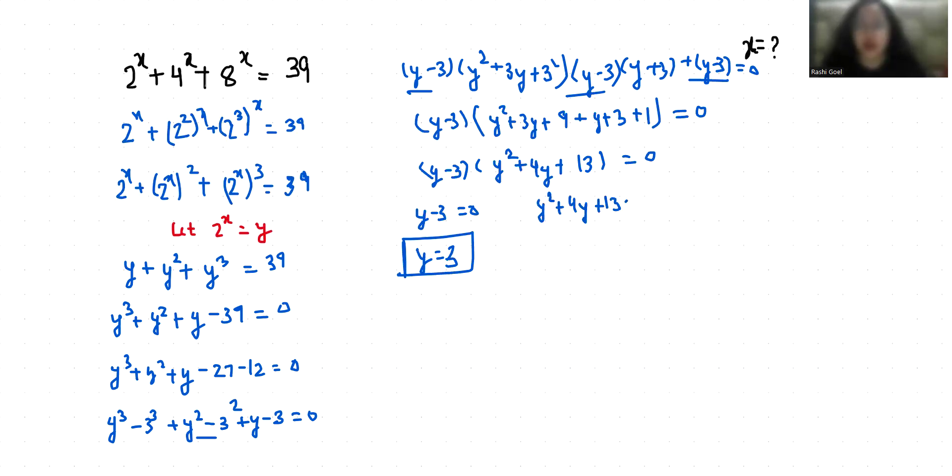So we are going to use quadratic formula: y = (-b ± √(b² - 4ac)) / 2a. So y = (-4 ± √